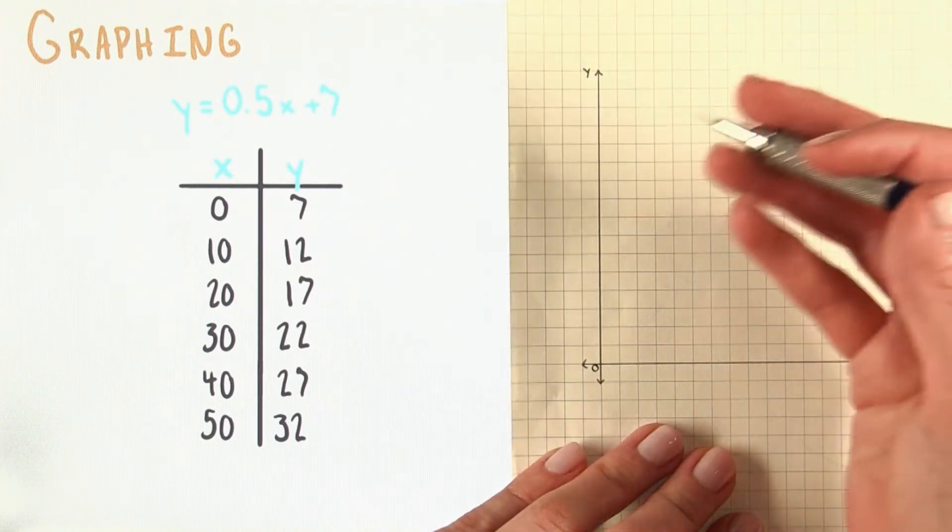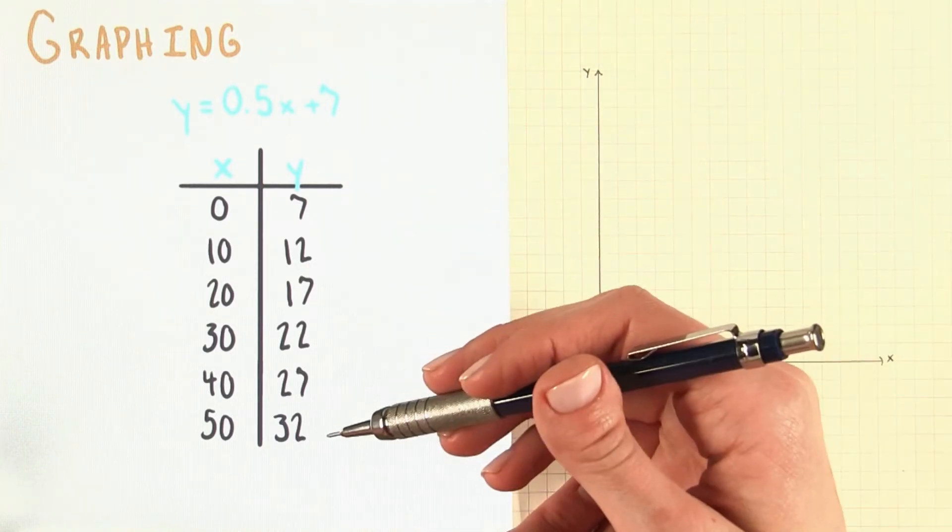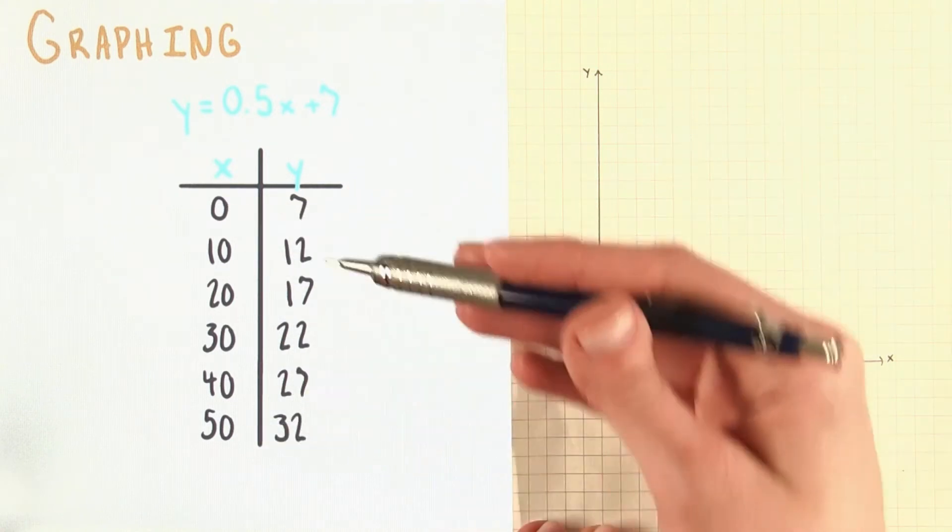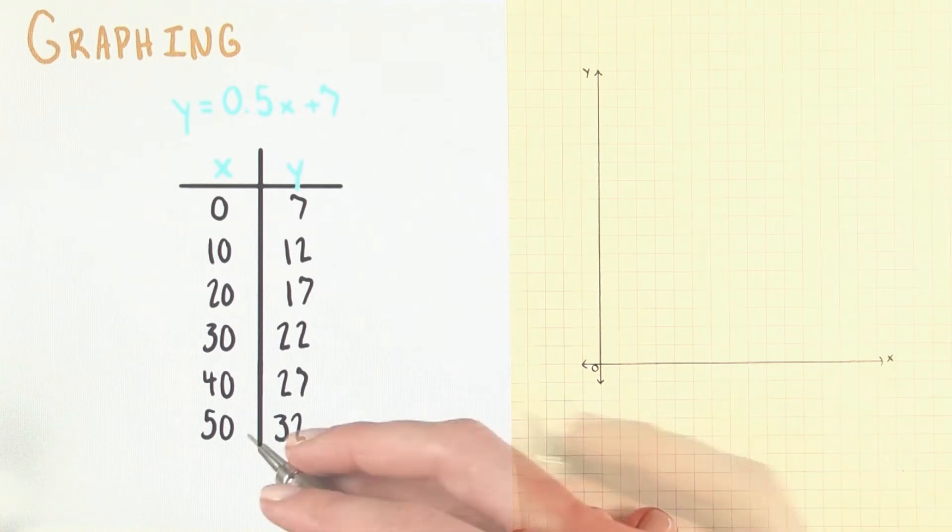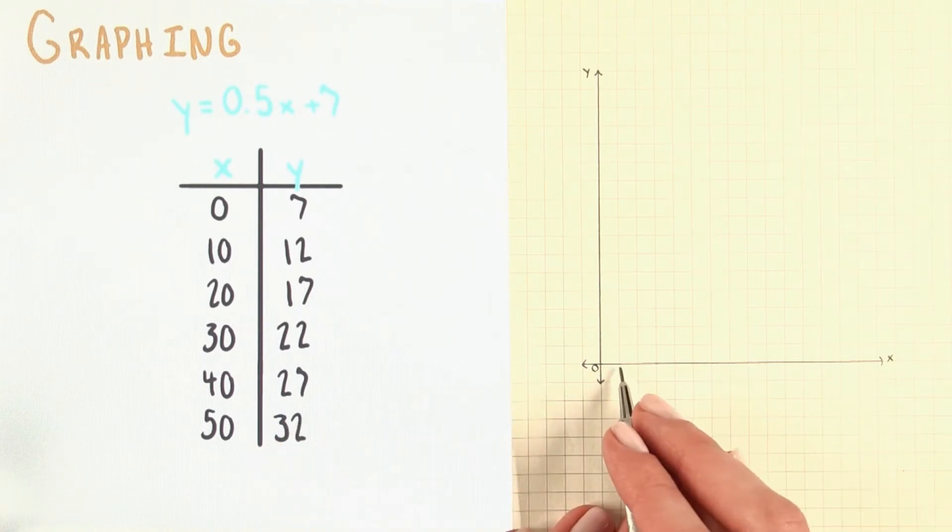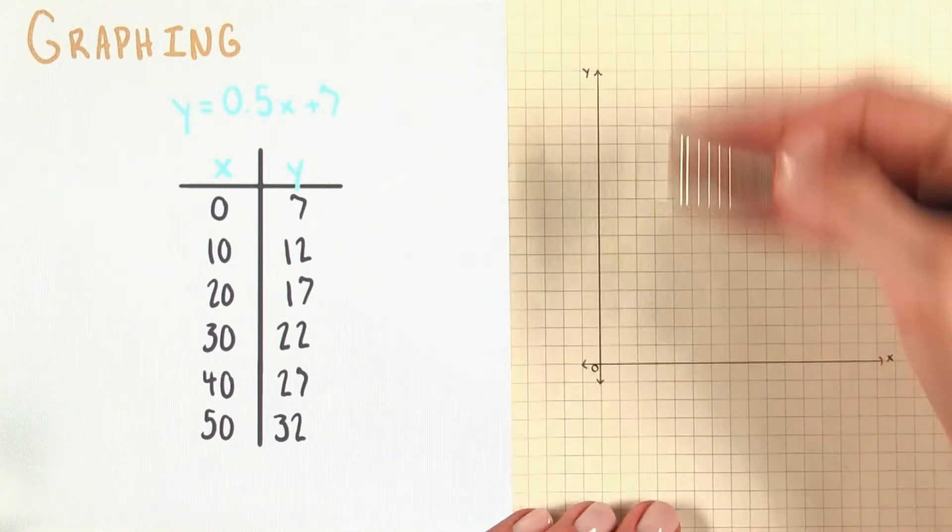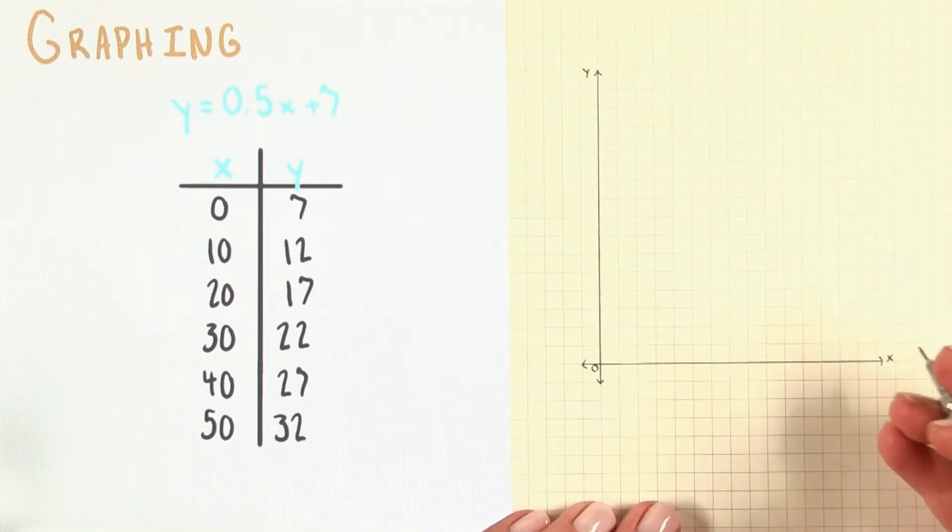Great, now I have some axes. However, let's look at what numbers we actually need to plot. We need to plot from 0 to 50 in x, and from 7 to 32 in y. We've got 0 laid out, that's great. But to go all the way to 50, I clearly can't have each one of these boxes stand for 1 on the x-axis, or on the y-axis, either. So we need to make a scale.